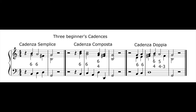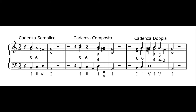Here are the three types of cadence showing figured bass. Although this example is in 4/4 time, these patterns can be adjusted to fit other time signatures. You can see that increasing the length of the dominant in the bass presents the opportunity to add more complex harmony around it.